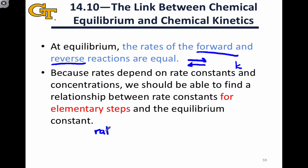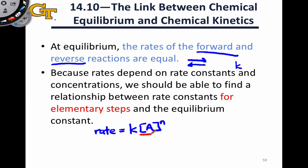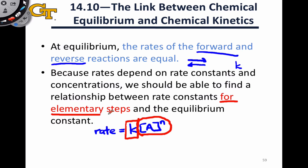The rate law for a chemical reaction relates the rate to the rate constant and concentrations raised to some power. But these concentrations raised to powers appear in the equilibrium expression. And so that leads us to suspect that there might be a relationship between the rate constants for forward and reverse processes and the equilibrium constant. And in fact there is, provided we're looking at an elementary step that's reversible.